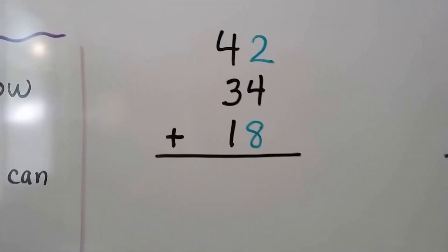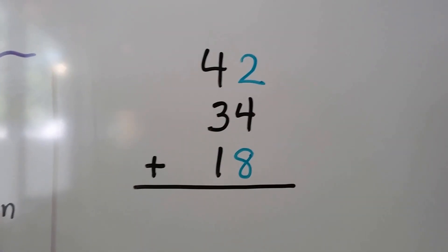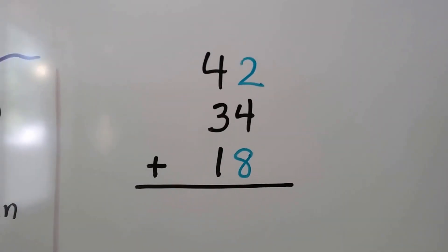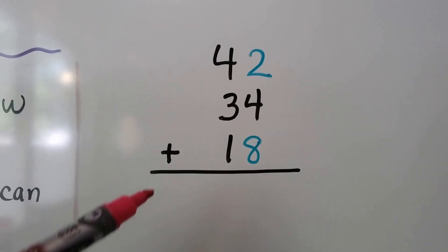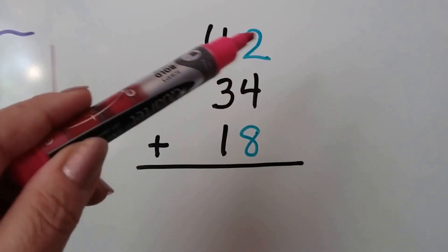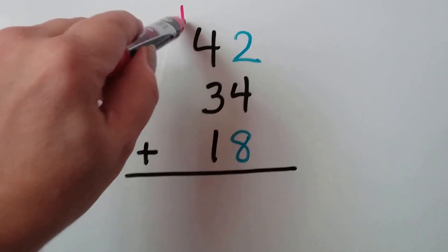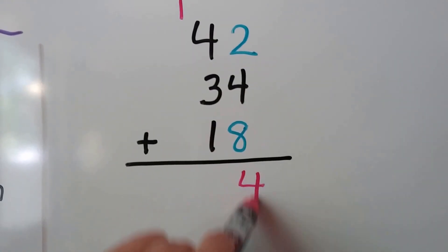So let's try that and keep a lookout for friendly numbers. I made it easy for you because I made the friendly numbers blue. So we're going to add the friendly numbers first in the ones column: 8, 9, 10. Now we can just add the 4. It's 14. It's easy to add a number to 10.